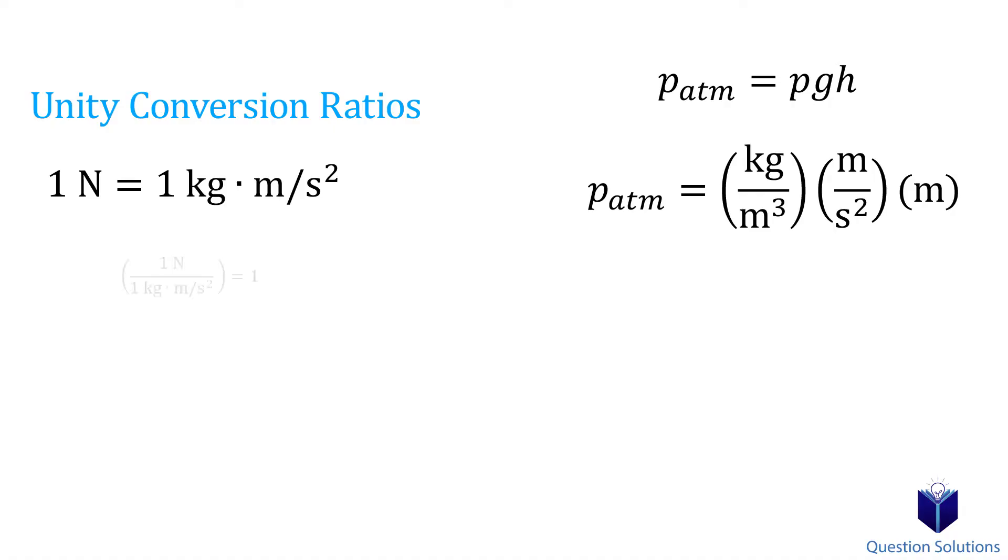Another way of writing it is this. This is a unity conversion ratio. They are unitless, and because of that, these ratios can be plugged into a calculation to convert units. Here is another one. This one says one pascal is equal to one newton per meter squared.